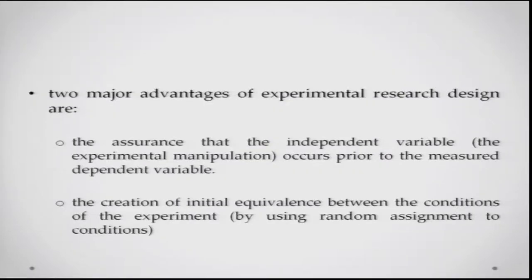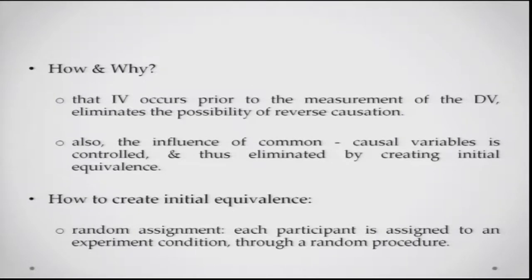Two major advantages of experimental design are: first, it assures you that the independent variable actually occurs prior to the measured variable because you created initial equivalence. Second, the creation of initial equivalence between conditions tells you that the effect is not arising because of any other factors. Because the IV generally occurs prior to the measurement of the DV, that eliminates the possibility of reverse causation. Also, the influence of common causal variables is controlled by creating initial equivalence through random sampling or random assignment of participants to conditions.